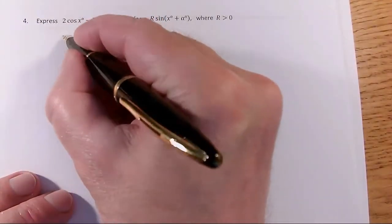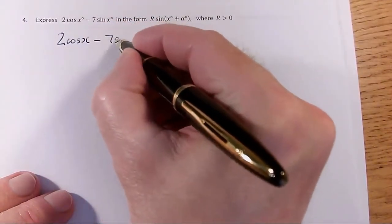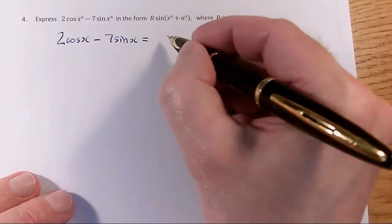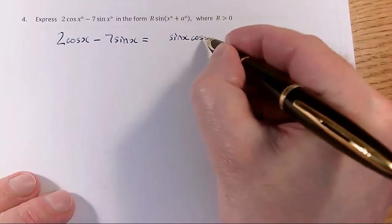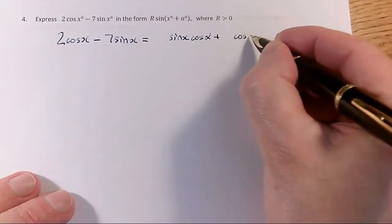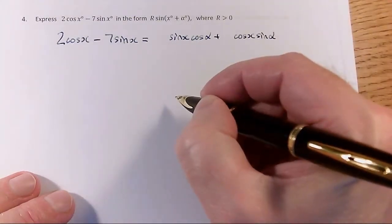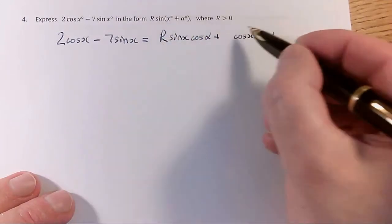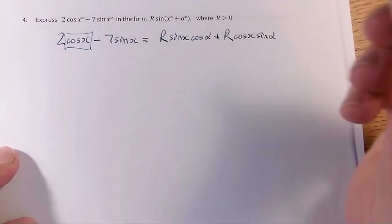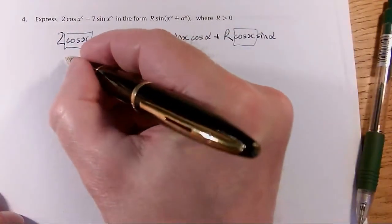But we start out the same way. So 2 times cos of x minus 7 times sine of x is going to be, expand out sine of a plus b is sine a cos b plus cos a sine b with x as an alpha instead of a and b. And of course it's times r, so I have an r there and I have an r there. And I go matching, so cos x here matches with cos x here. So r sine alpha is going to equal 2.